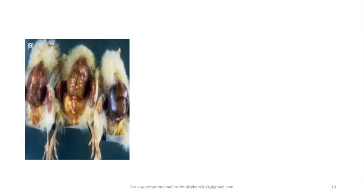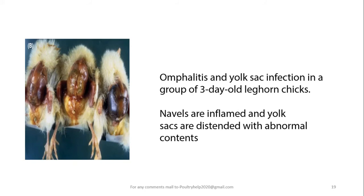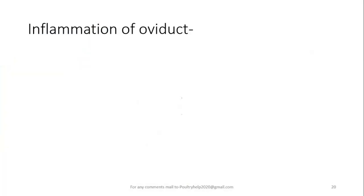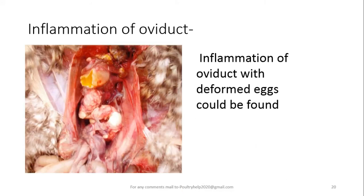In this picture — can you guess what it is? Yes, these are hyperemic conditions. Another postmortem finding associated with the disease is inflammation of the oviduct. Inflammation of the oviduct is characterized by reddening and deformed eggs that can be found within it.